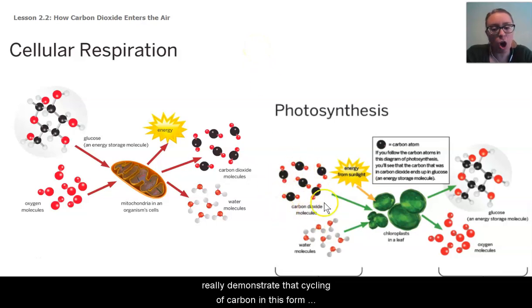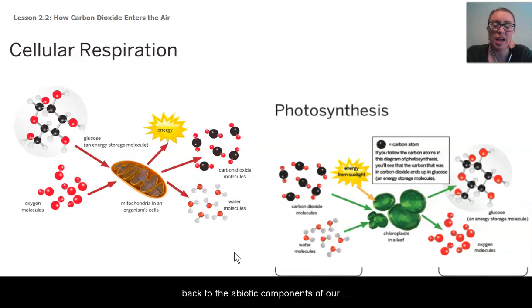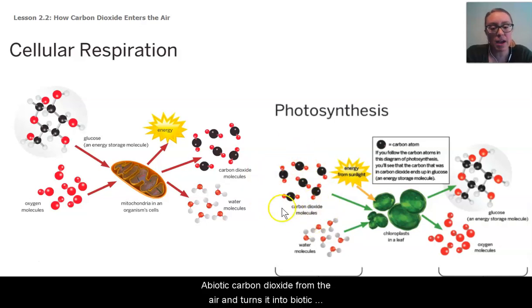Carbon dioxide from the abiotic to the biotic and then back to the abiotic components of our ecosystem. Photosynthesis takes abiotic carbon dioxide from the air and turns it into biotic carbon in an energy storage molecule.